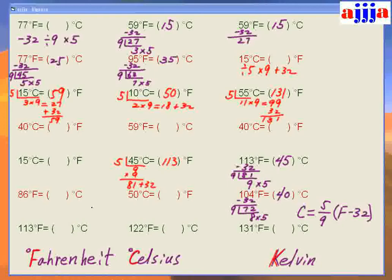Let's try this one. Divide by 5 — it's going to be 11, times 9, which is 99, then plus 32. So: 9 plus 2 is... then 13, so 131. That's it.